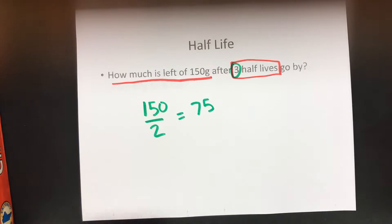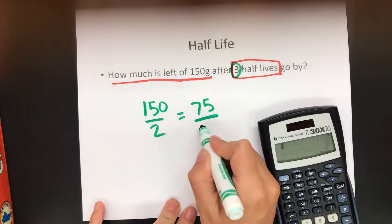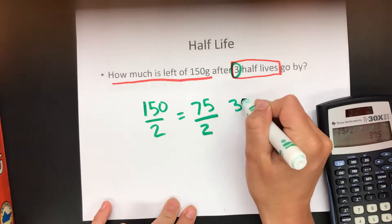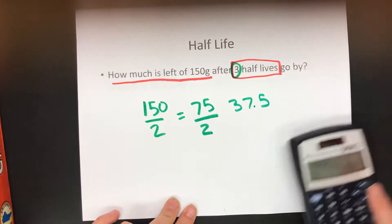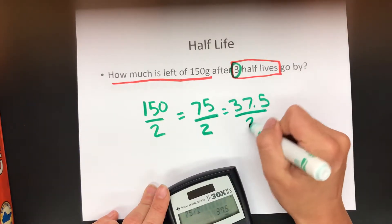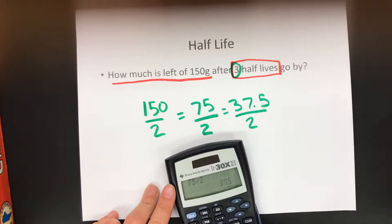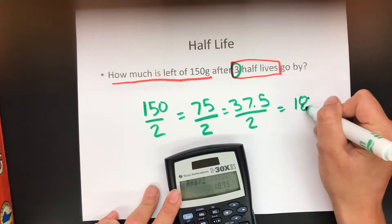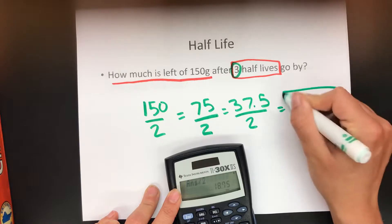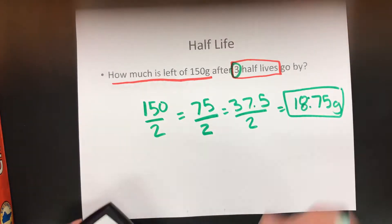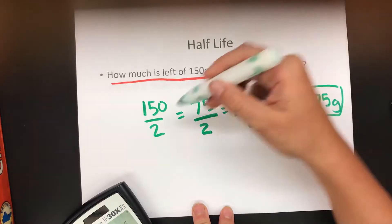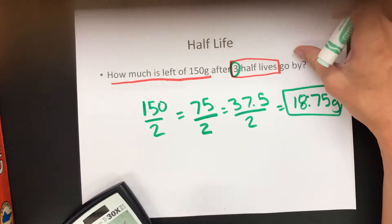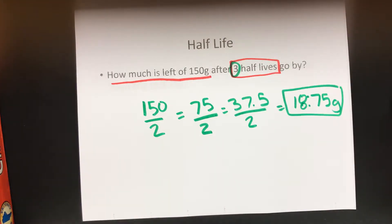It gets chopped in half again: 75 divided by 2 is 37.5. Another half-life goes by — three total — so you chop it in half again and get 18.75 grams. That's the answer. Three half-lives just means the sample is literally divided in half three times. Do not make it harder than it is.